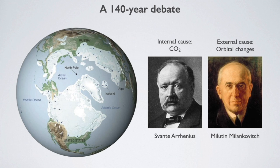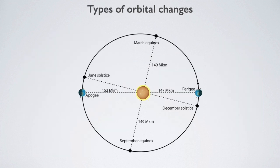Twenty years later, Milutin Milanković proposed that glaciations were due to changes in the orbit, which he calculated with pencil and paper. For Milanković, conditions during the northern hemisphere summers were important: short, cold summers caused glaciations, and long, warm summers caused interglacials. Milanković's theory was soon discarded, but in 1976, to everyone's surprise, it was discovered that glaciations did indeed follow Milanković's orbital frequencies.